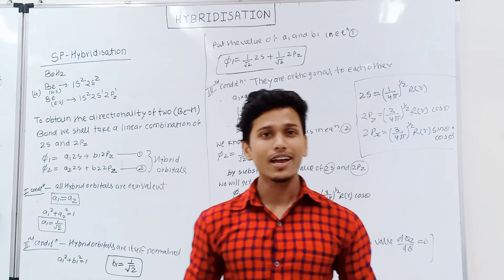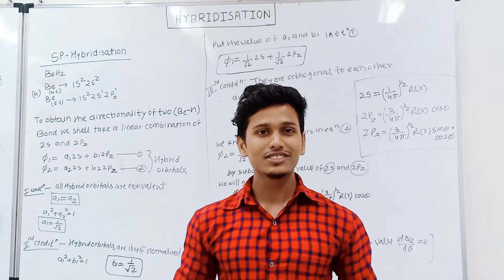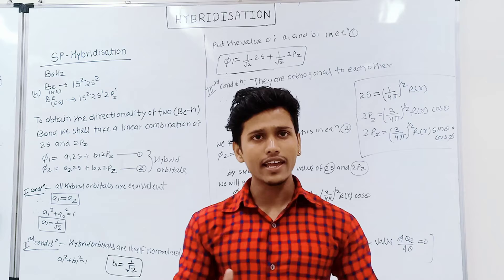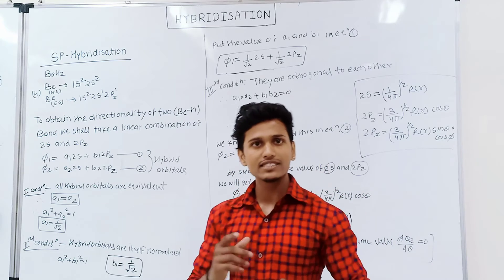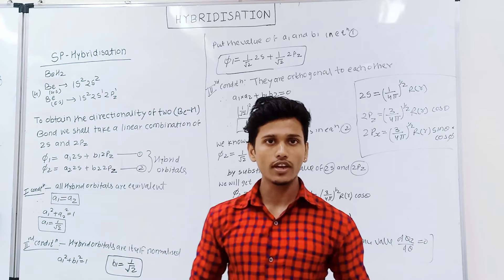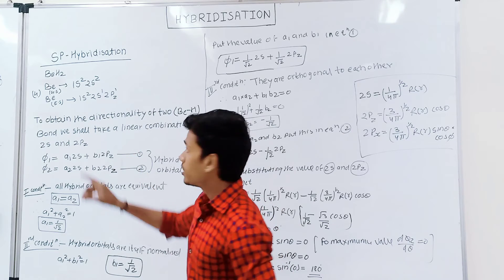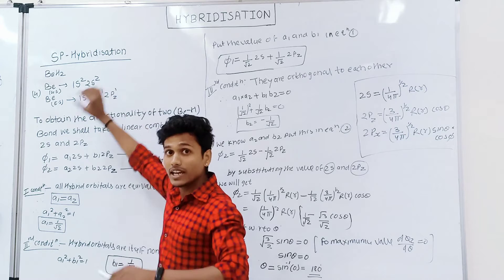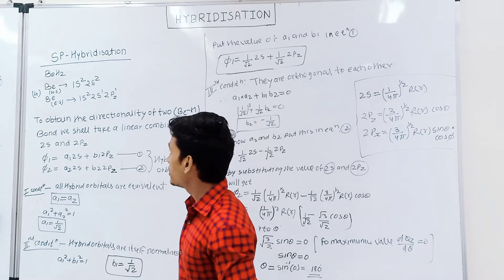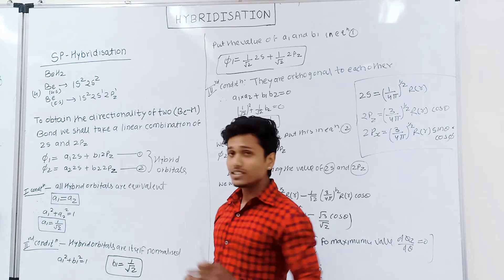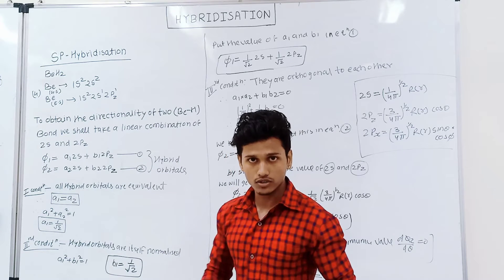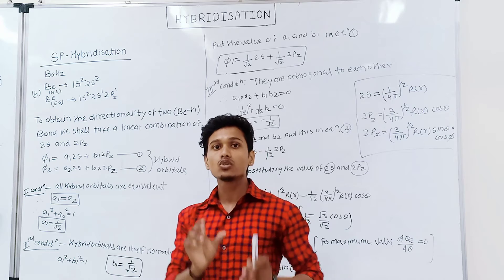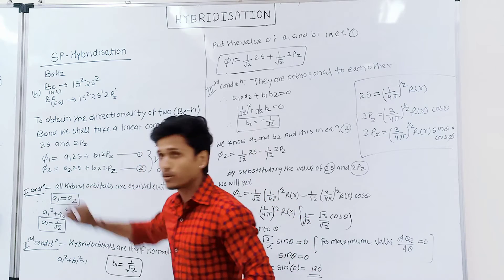Hello everyone, myself Dharmedra Prajapati. I am going to explain SP hybridization, which is a part of hybridization. We have to prove that SP hybridization has an angle of 180 degrees. We consider the example of beryllium hydride. The configuration of beryllium hydride in the ground state is 1s2, 2s2, and in the excited state this electron from the S orbital gets transferred to the P orbitals. To obtain the directionality of the two beryllium-hydrogen bonds, we take a linear combination of 2S and 2Pz, giving two equations: phi1 and phi2, which are the two hybrid orbitals.